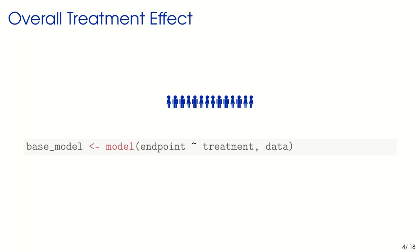How do we usually estimate the overall treatment effect? We have some endpoint of interest — say a health score or survival — and then we have the treatment as a covariate, which is usually binary (treatment A or treatment B), along with the data from a randomized clinical trial. We compute a model and get an overall treatment effect model, which I'll call the base model. This is the foundation for all other analyses, because we don't want to use a totally different model just because we're doing stratified or personalized treatment effect estimation.